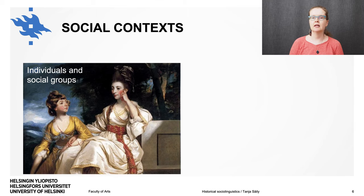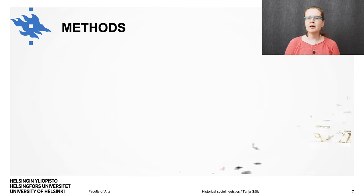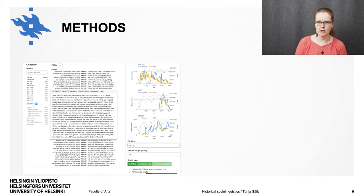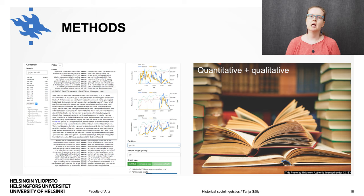Historical social linguistics can help us to uncover the social contexts in which a linguistic change happened, like the individuals and social groups who were at the forefront of the change, and possible external events that may have sped up or slowed down the change. Using methods from corpus linguistics, we can get a quantitative overview of the language change over time in large electronic text collections, and when we combine this with a qualitative study of the texts aided by historical research and contemporary sources, we're able to interpret the change in its socio-historical contexts.